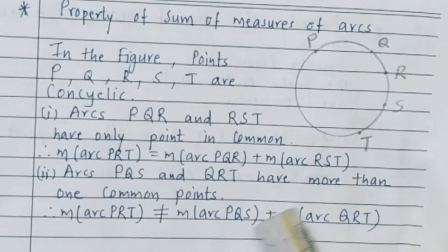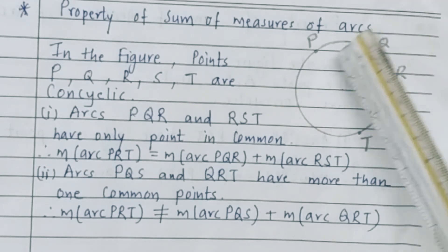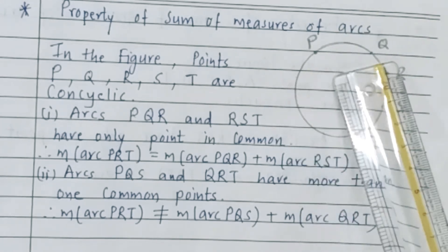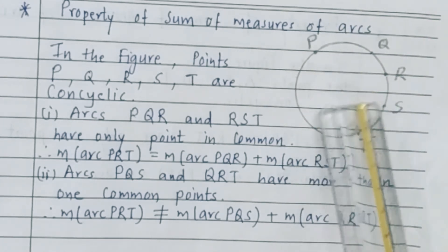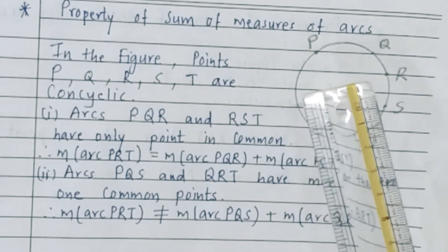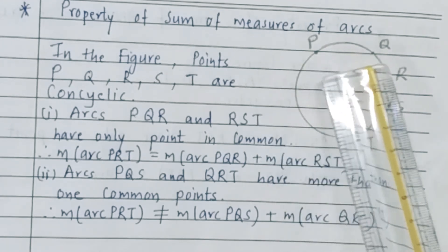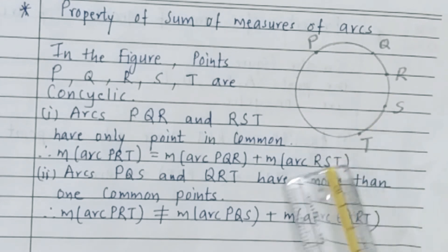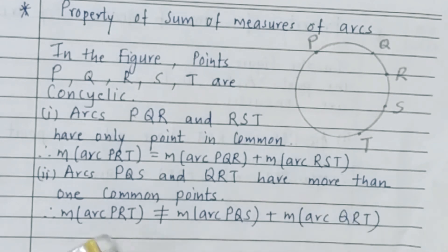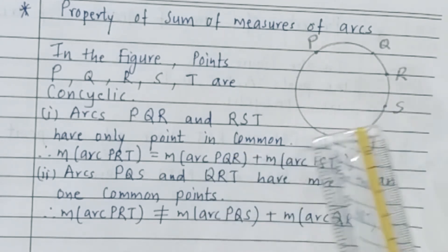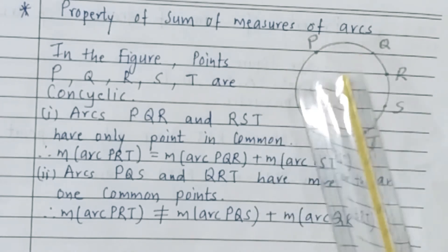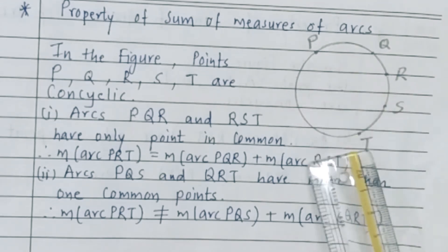Therefore, major arc PRT is equal to major arc PQR plus major arc RST. The second condition is arc PQS and arc QRT have more than one common point. Therefore, major arc PRT is not equal to major arc PQS plus major arc QRT.